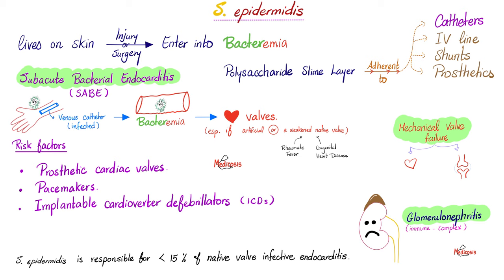Staphylococcus epidermidis lives on your skin. After injury, surgery, arterial line, or venous line, it can enter your blood, causing bacteremia and endocarditis — especially if your heart valves are artificial or weakened because of rheumatic fever or congenital heart disease. The bacteria attaches well to catheters because it has a polysaccharide slime layer — we call these biofilms. Staphylococcus epidermidis can lead to failure of the valve in your heart or failure of your artificial joint.